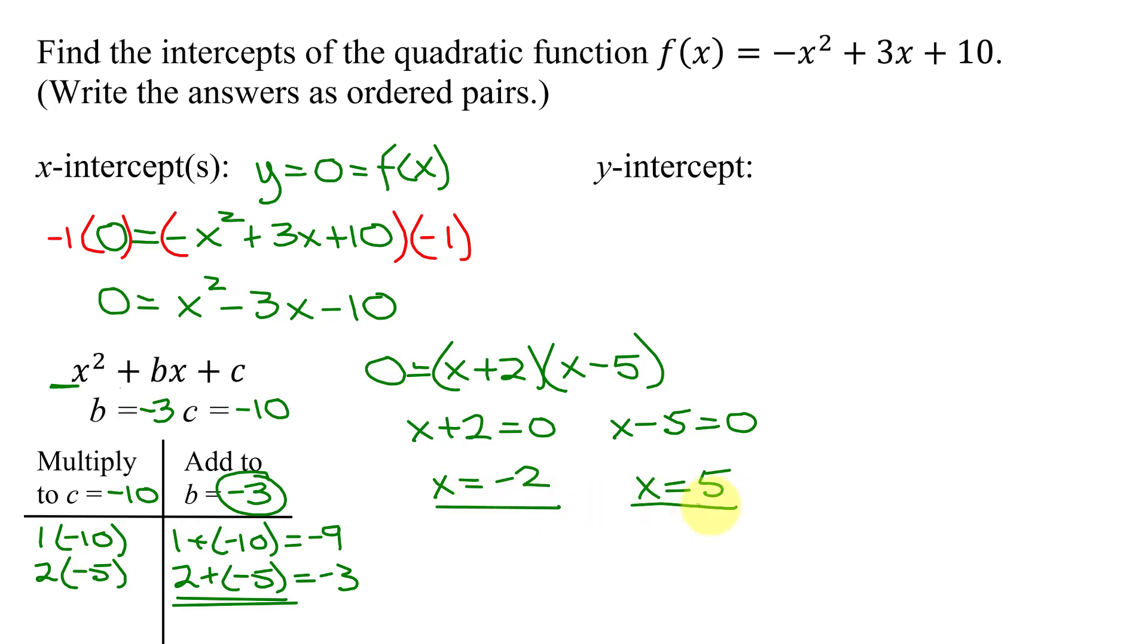So this function has two x-intercepts. Don't forget I need to write them as ordered pairs. The first one, the x-coordinate was negative 2. What's the y-coordinate? 0. And the second x-intercept, the x-coordinate is 5, and the y-coordinate again is 0. So there are the two x-intercepts for this quadratic function.